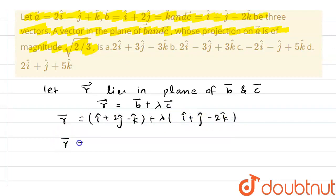That is i cap plus j cap minus 2k cap. Now if I solve it, I will get 1 plus lambda into i cap, 2 plus lambda into j cap, and minus 1 minus 2 lambda into k cap. Now let this be equation number 1.